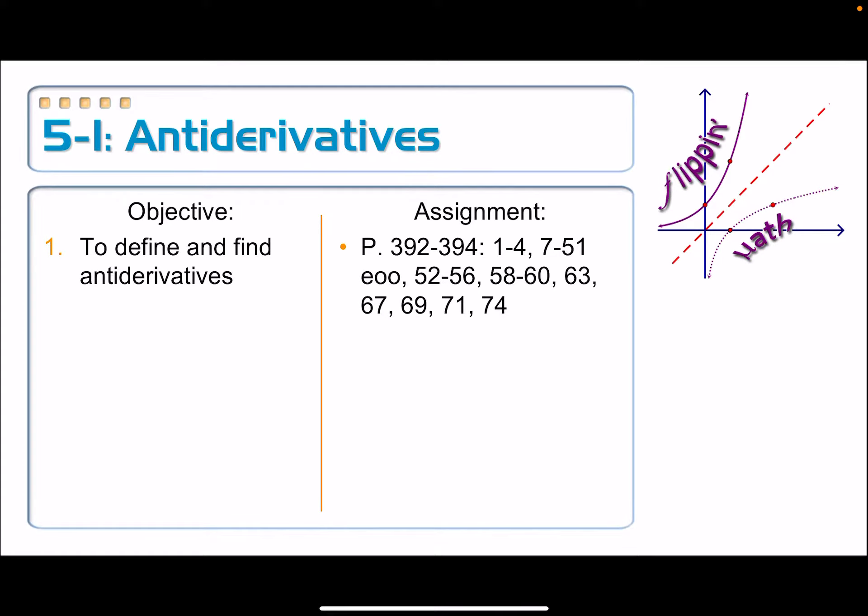As you will recall, we started the year in calculus by taking limits. Eventually, limits led to the definition of a function that we call the derivative. The derivative gave us the slope on the graph of that function for every single point. Then we learned lots of techniques to take derivatives. Eventually, we learned applications of those derivatives. What this next unit is all about is working that derivative process backwards.